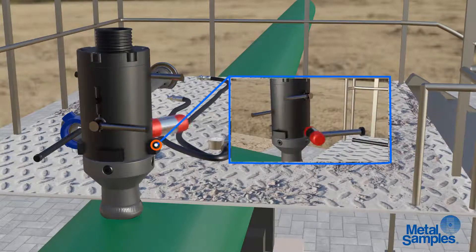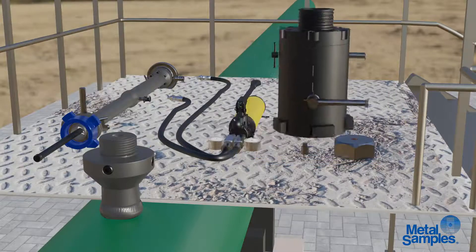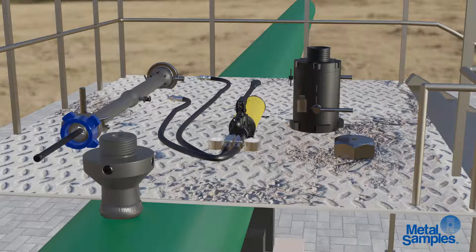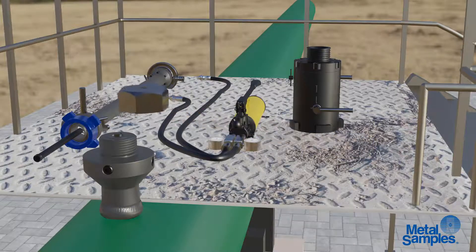Unscrew the service valve from the access fitting. Reinstall the pipe plug. Put back the cover and tighten well.